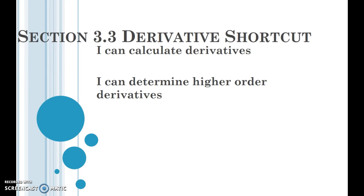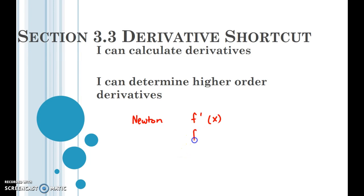I want to point out something before we begin. Calculus was developed at around the same time by two different people. Newton used this notation for derivatives. If Newton wanted to take a derivative, he would call it f prime of x. If he wanted to take another derivative, he would take f double prime of x — he would just add tick marks.